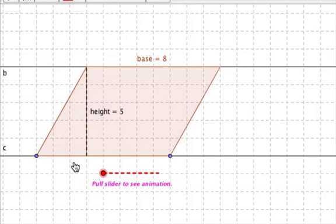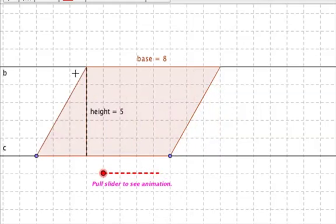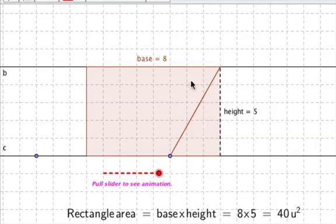But this parallelogram and this rectangle have the exact same area, because all we're doing is taking this corner of a parallelogram, cutting it off, and reapplying it with no overlaps, no gaps, onto the other side. So we've taken the parallelogram and created a rectangle.